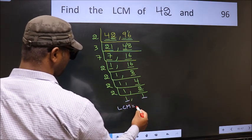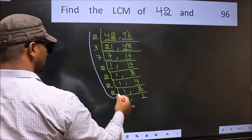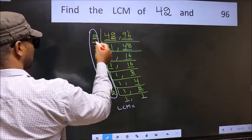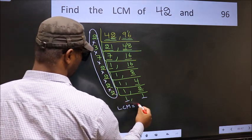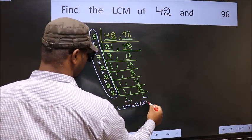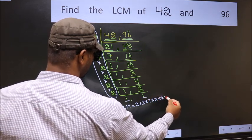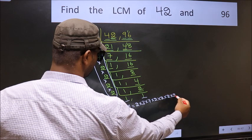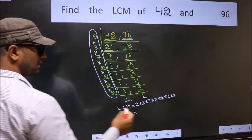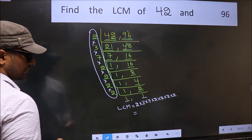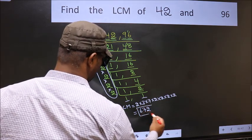So our LCM is the product of these numbers. That is 2 × 3 × 7 × 2 × 2 × 2 × 2. When we multiply these numbers, we get 672 — that is our LCM.